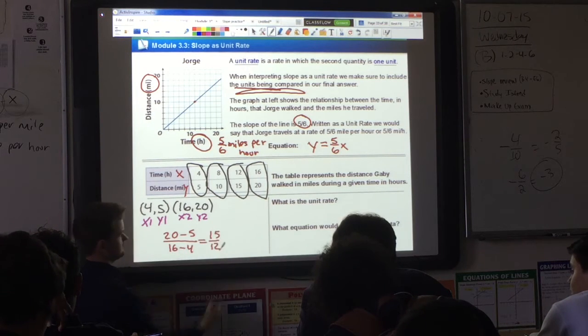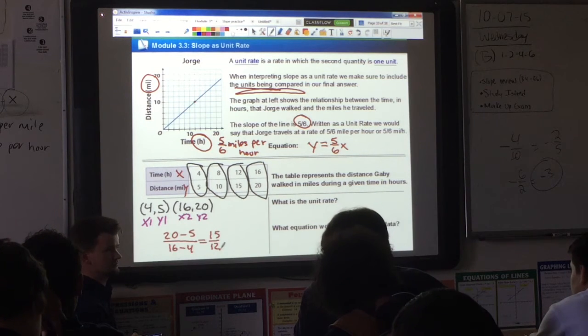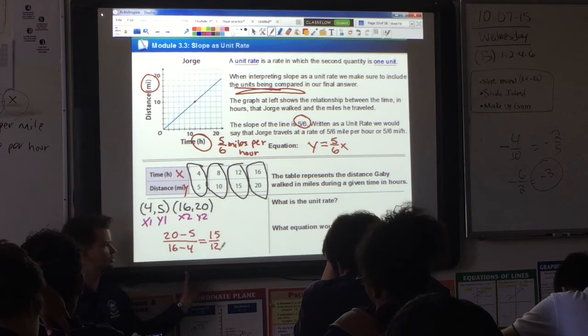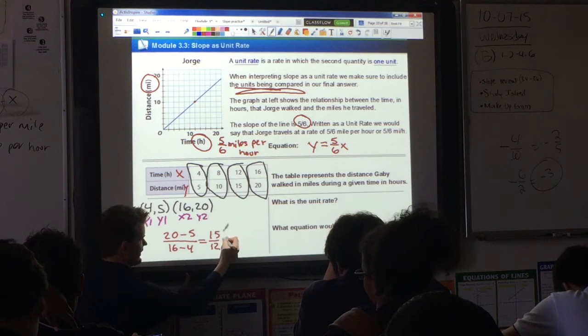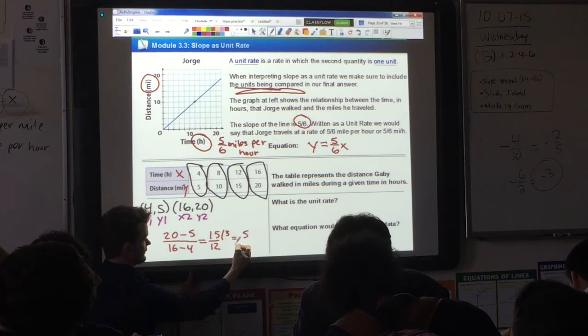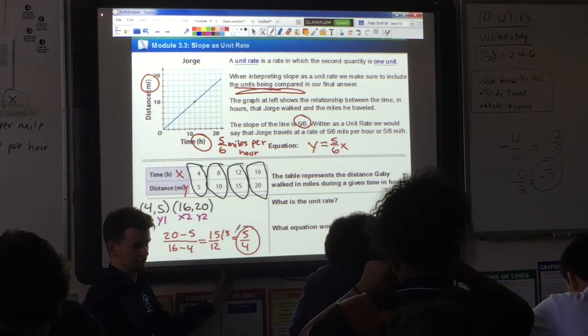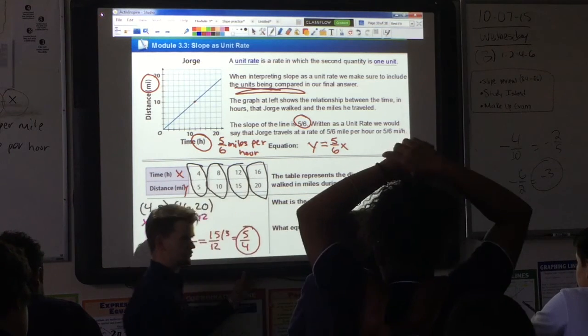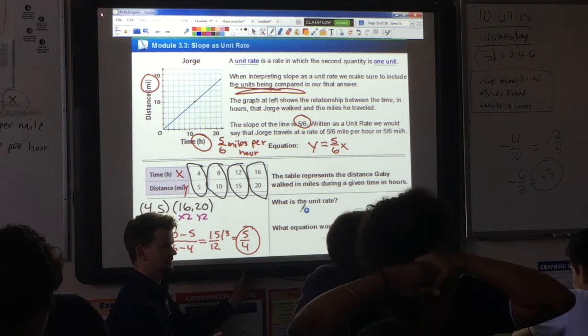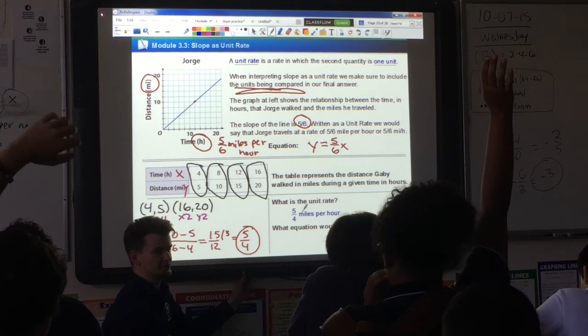Can we simplify that? Yes. What does that simplify to? 5 over 4. What did you divide both by? 3. Divide them both by 3. So if we divide this by 3, we get 5. If you divide this by 4, you get 4. So the unit rate is 5 over 4. That's the slope. And then the unit rate written out correctly would be 5 fourths miles per hour. That's the unit rate.